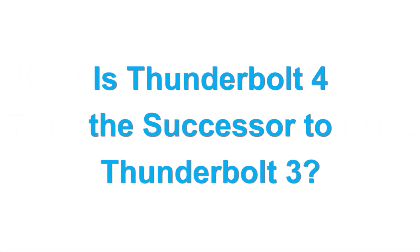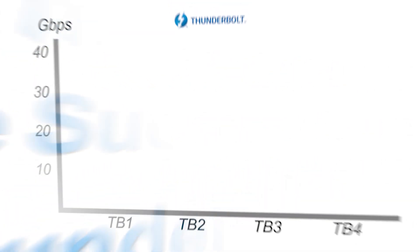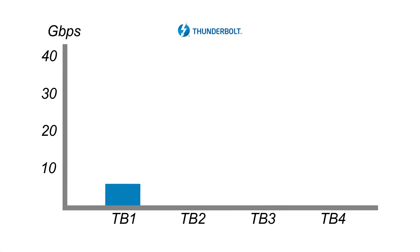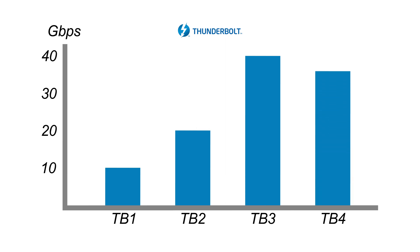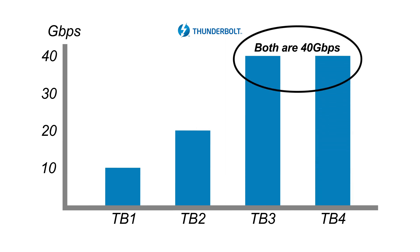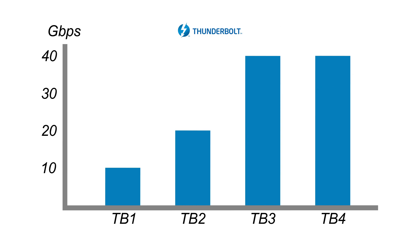Let's start by asking: is Thunderbolt 4 the successor to Thunderbolt 3? You may expect this to be the case. After all, the data stream of Thunderbolt 1 was 10 gigabit, Thunderbolt 2 was 20 gigabit, and Thunderbolt 3 was 40 gigabit. But the speed stops there — a Thunderbolt 4 data stream is also 40 gigabit. Thunderbolt 4 is neither a successor to nor a replacement of Thunderbolt 3. Let that sink in.